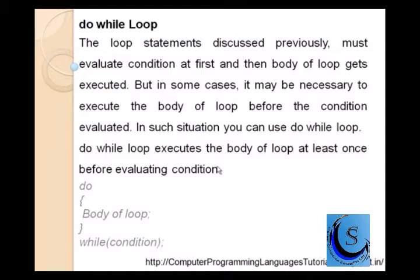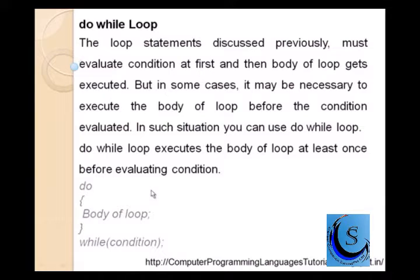In the case of do-while, the do part gets executed first, and then the condition is checked in while. Therefore, at the beginning of the loop, if you have a false condition, then also at least one time the do part gets executed. It is exactly opposite to the while loop. In the case of while loop, it first checks the condition and then executes the program. But in the case of do-while, it first executes the code and then checks the condition. It is also known as a post-condition check.